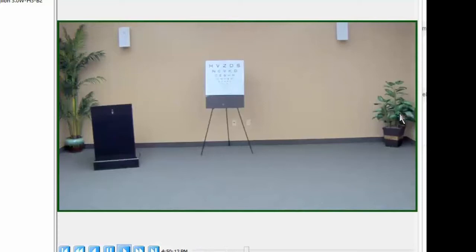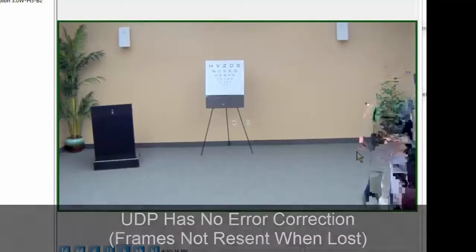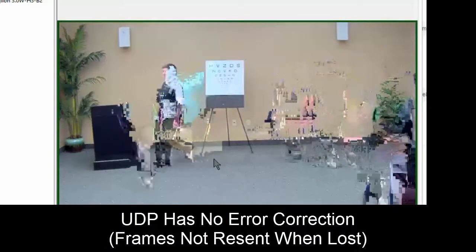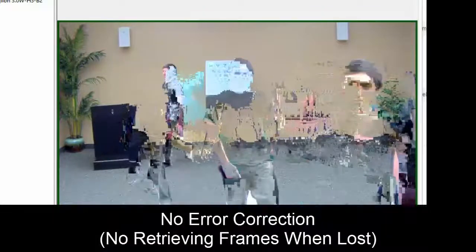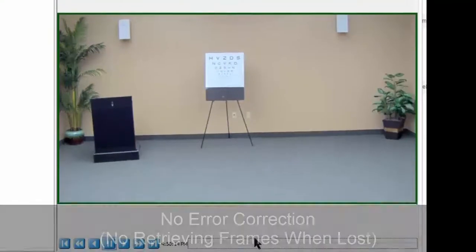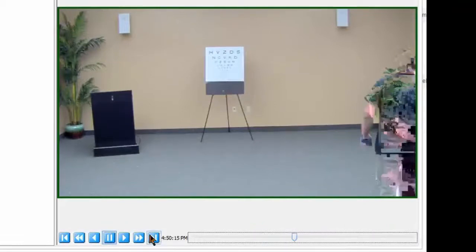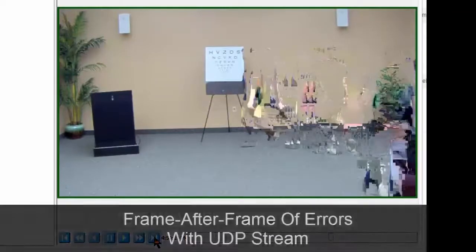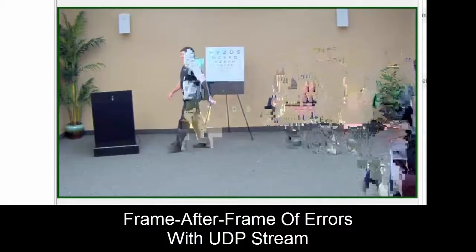Since UDP has no error correction like TCP does, it's not resending frames as they're lost. As we're dropping packets, it's simply moving on to the next set of packets in the stream. There's no error correction, there's no retrieving that lost video. And unlike TCP where we could step through the video and most frames were there, as we step through the UDP stream we're simply going to see frame after frame of errors.